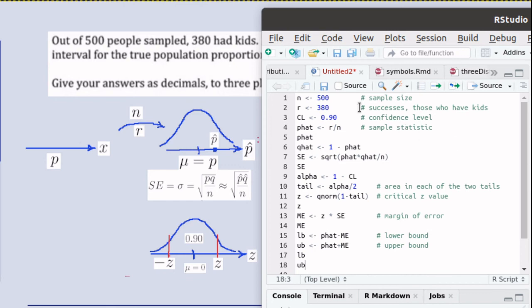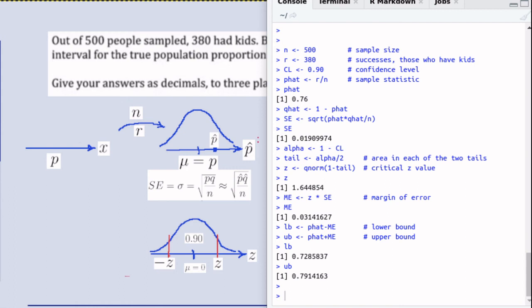So that completes our script for this particular problem. We would be able to find the lower bound and the upper bound. Let's run that script. Here's the output of our script. Here it's showing what the script was. We took the given values. We calculated the p hat. We shouted out the p hat value. We calculated q hat so that we could find SE. We shouted out that standard error.